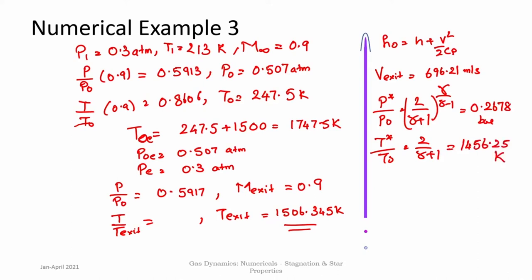With these three numerical examples, we now have clarity on the understanding of stagnation properties and star properties. Moving forward, these concepts will be used extensively to analyze normal shocks, which we will start from the next class.